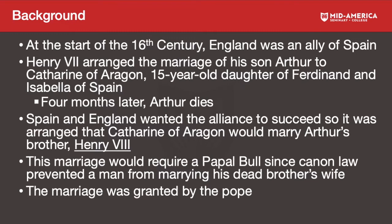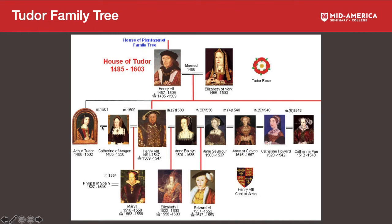At the start of the 16th century, England was an ally of Spain. Henry the Seventh arranged the marriage of his son Arthur to Catherine of Aragon, the 15-year-old daughter of Ferdinand and Isabella of Spain — the same Ferdinand and Isabella who sent Columbus. They arranged for these two to get married.